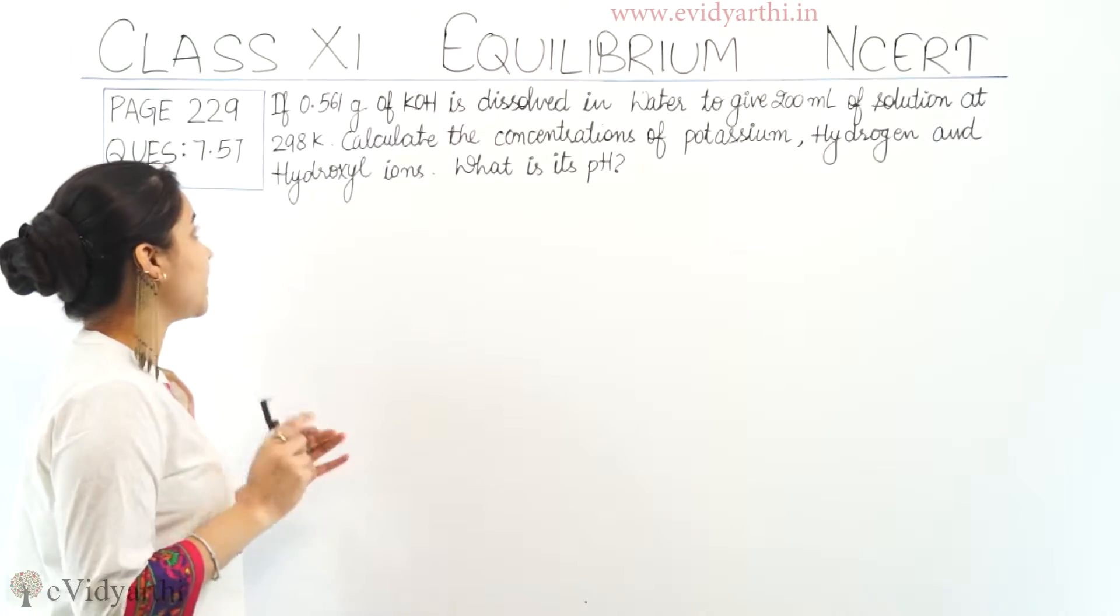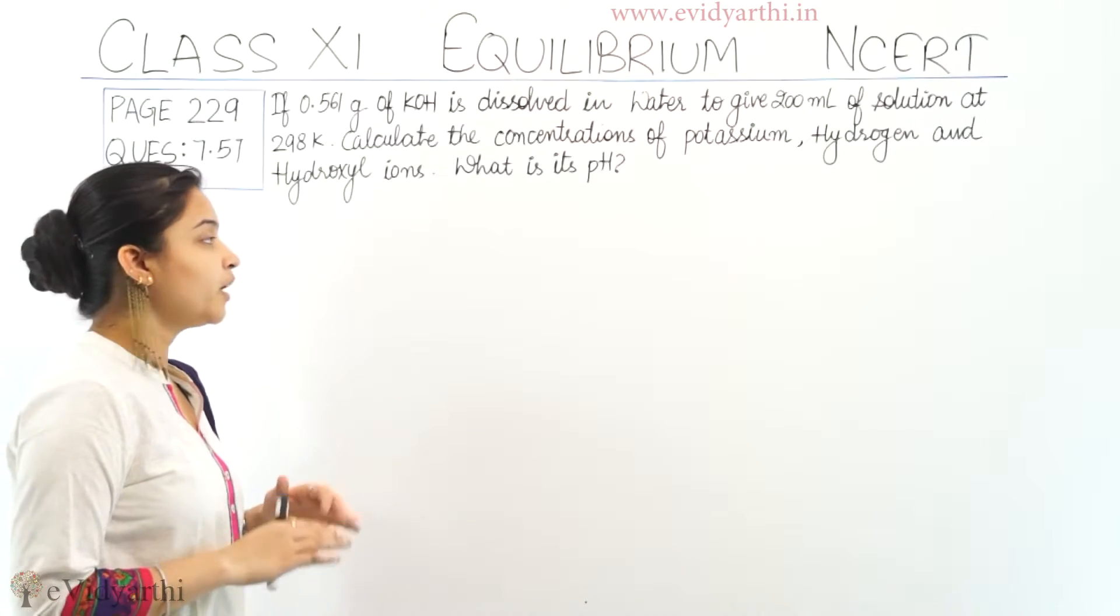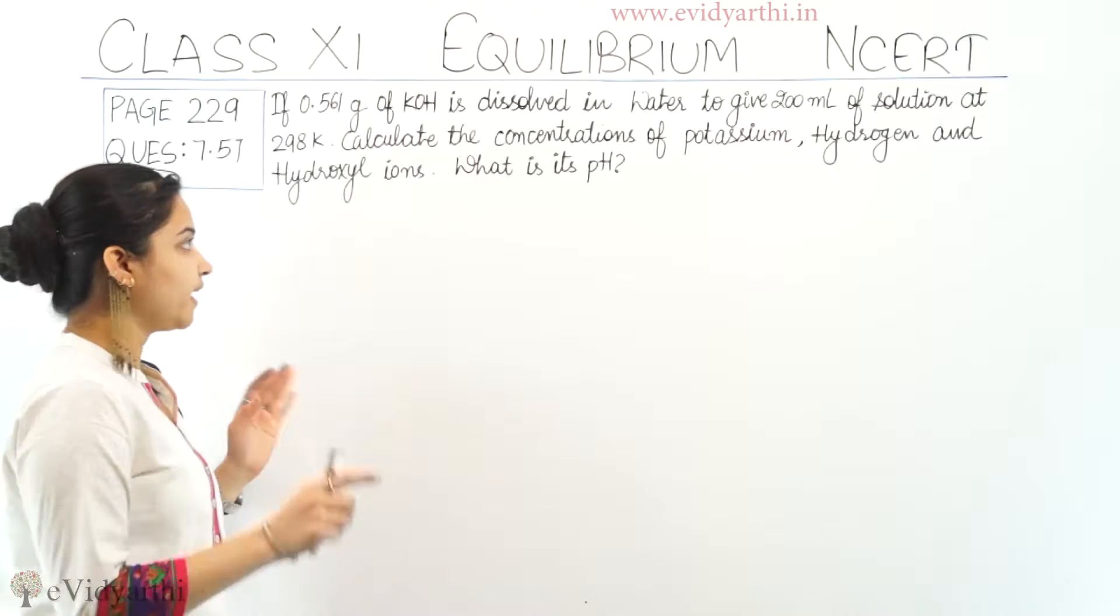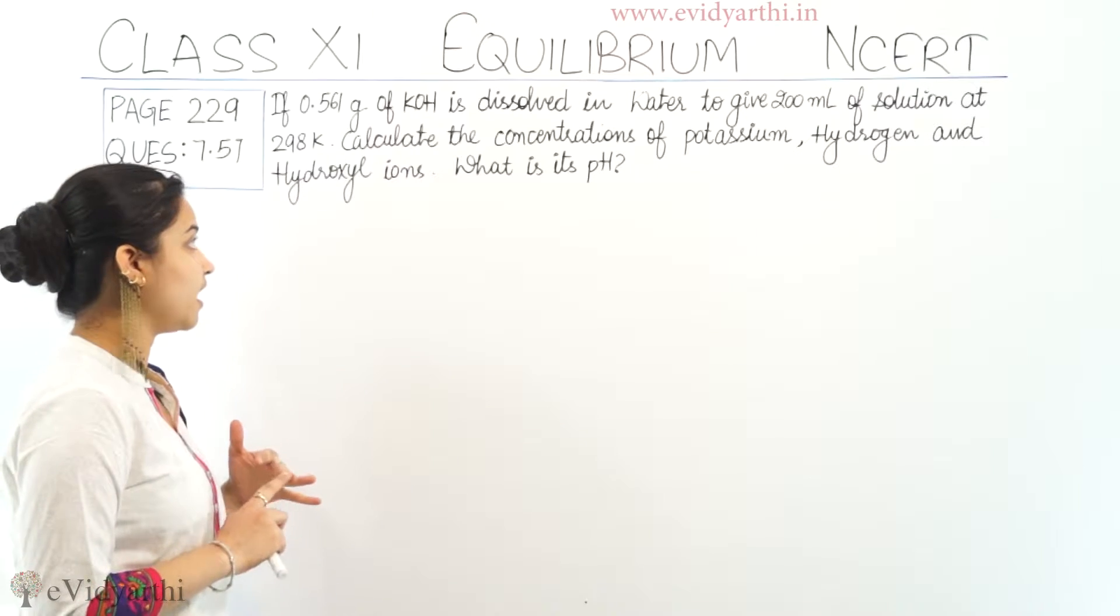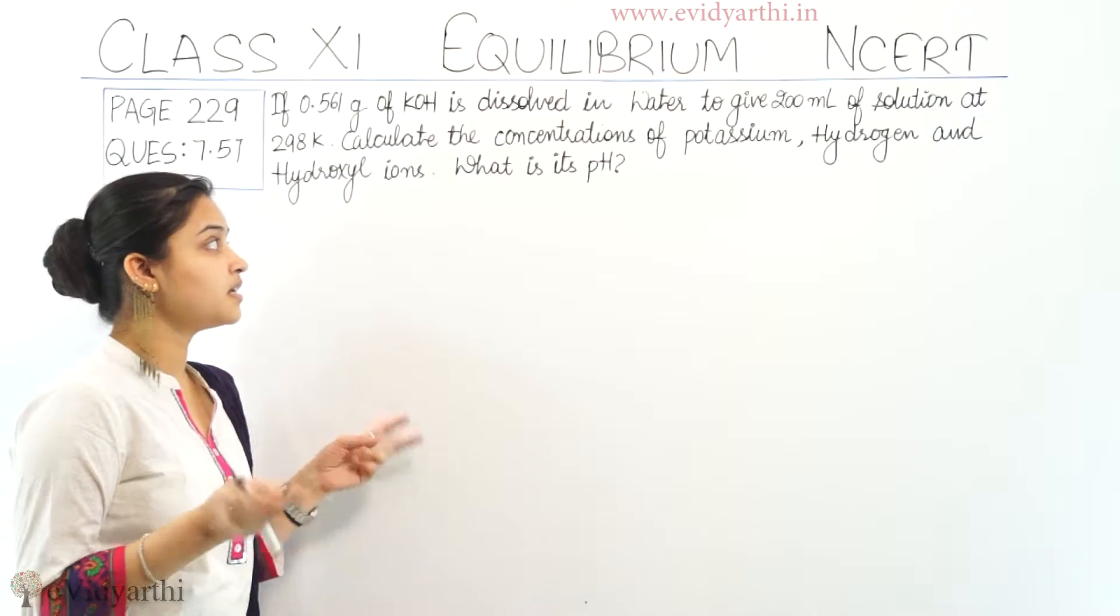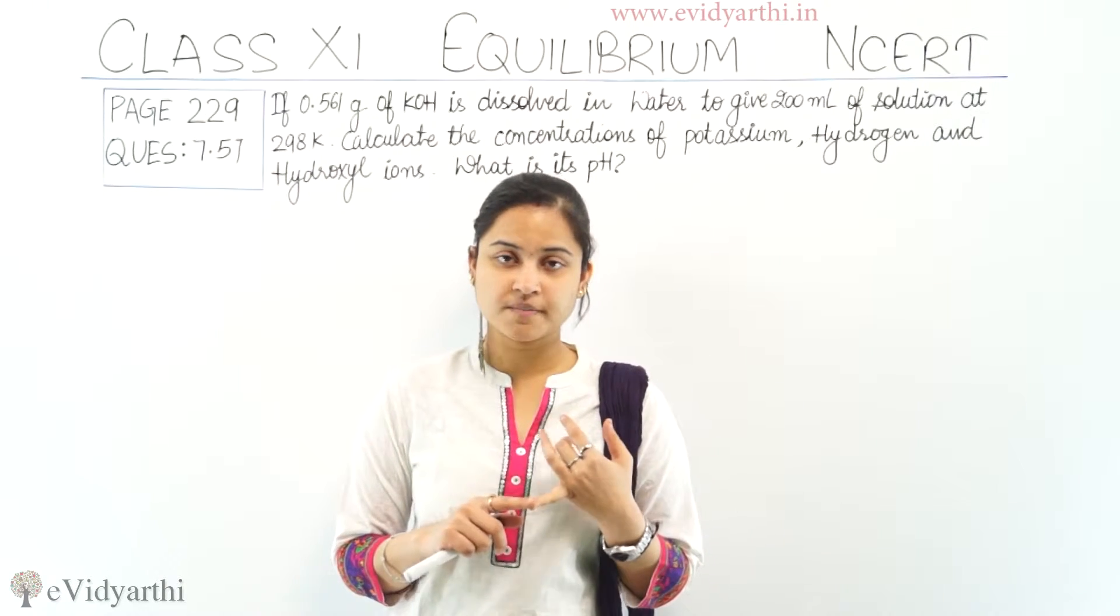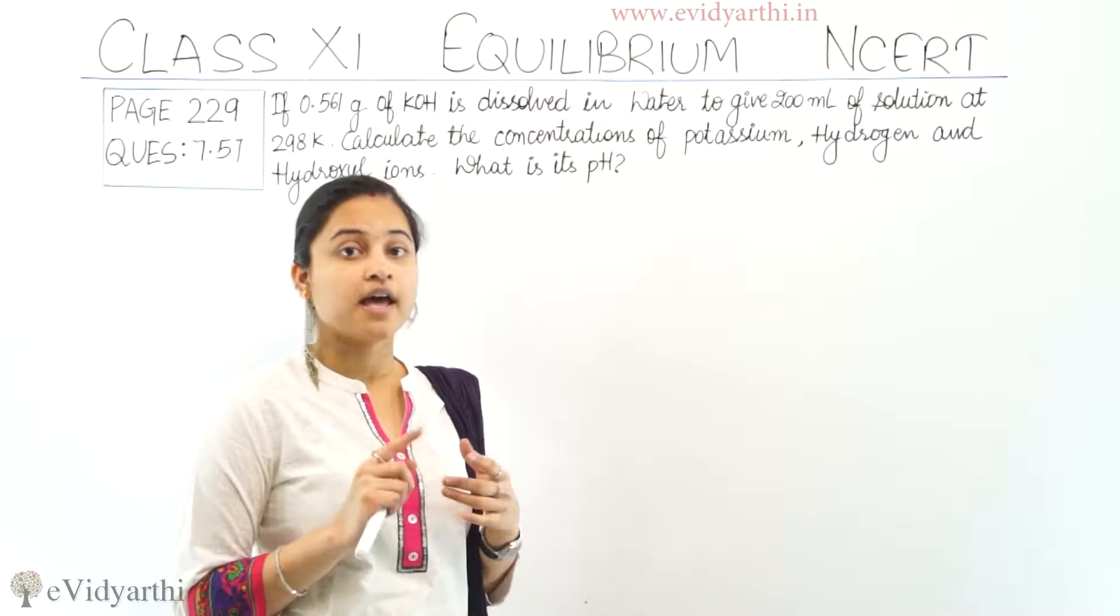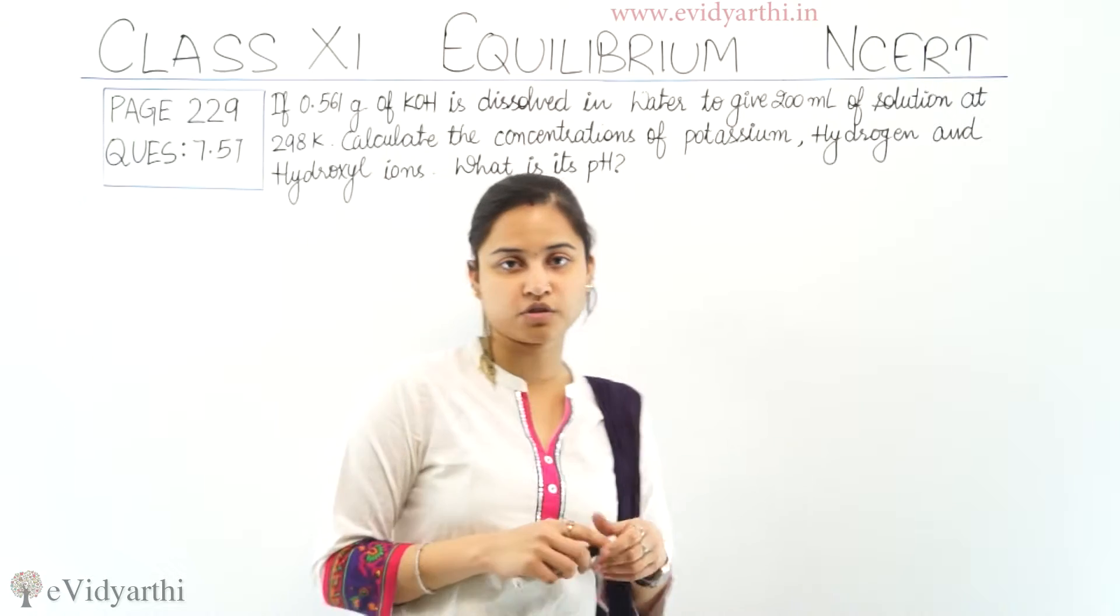The question is: if 0.561 grams of KOH is dissolved in water to give 200 ml of solution at 298 Kelvin, calculate the concentrations of potassium, hydrogen and hydroxyl ions and second is, what is its pH? We have to calculate out the pH of the solution.